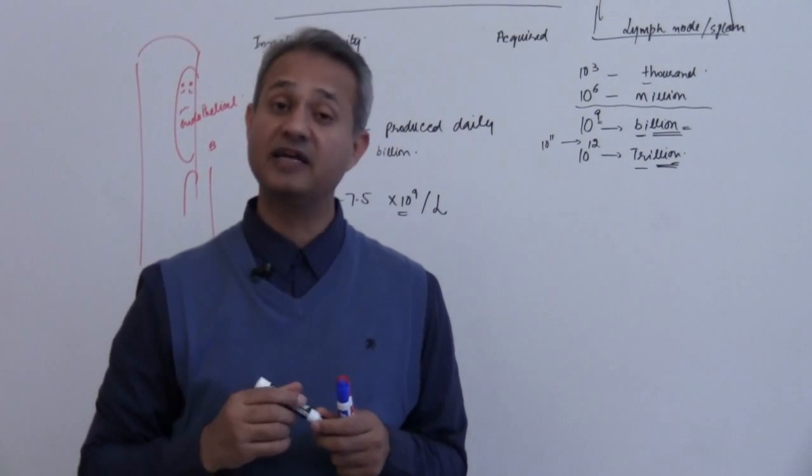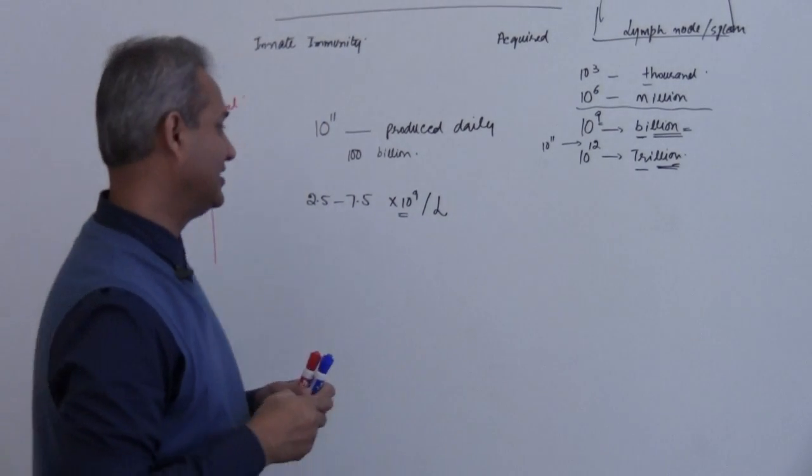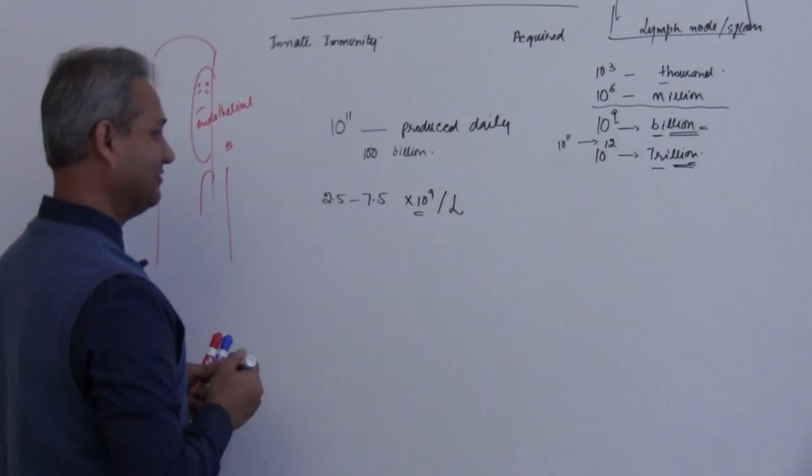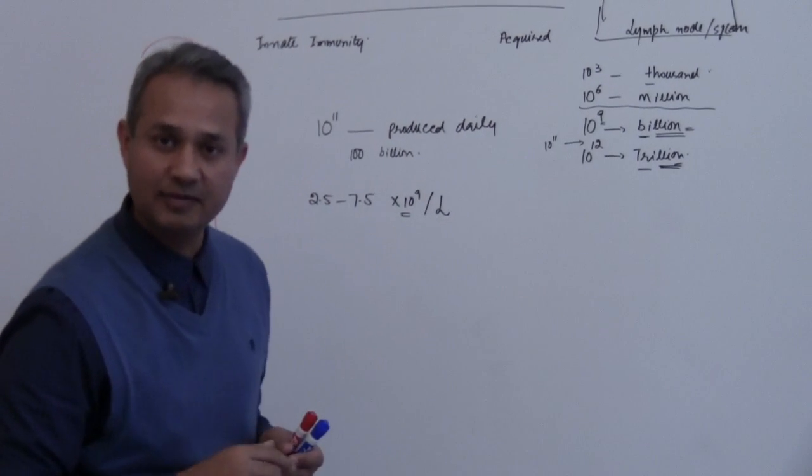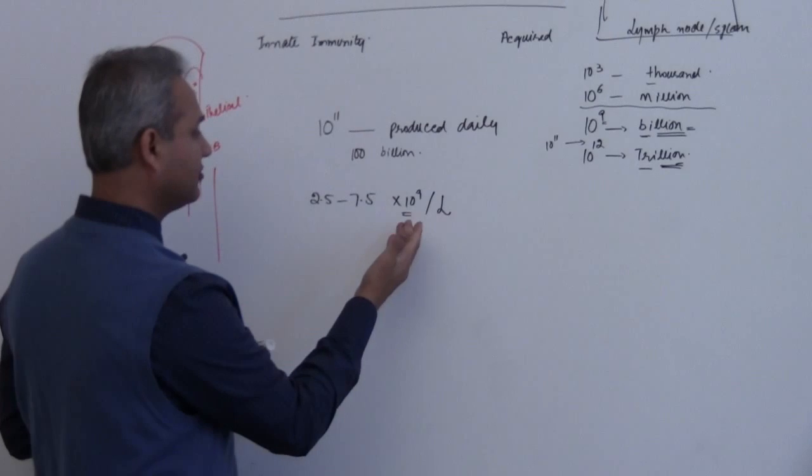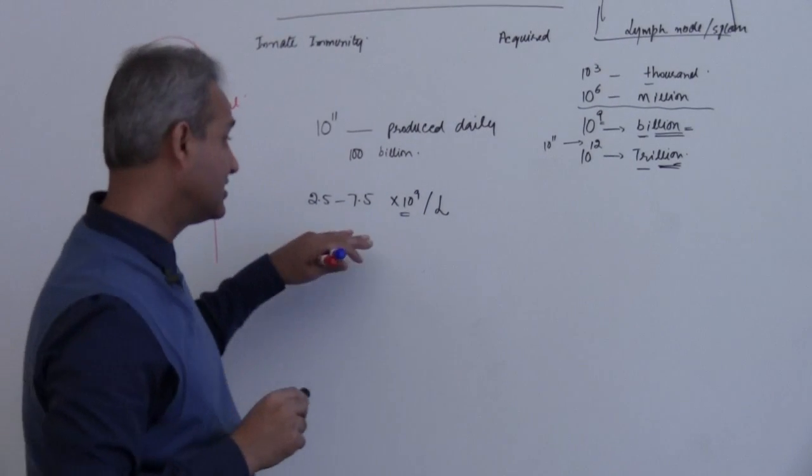So we are billionaires—per liter we are billionaires, or really trillionaires if you see all the liters in our body. But anyways, production is 10 raised to power 11, 100 billion per day. But really if you look at this, we have a lot of cells present in the circulation.